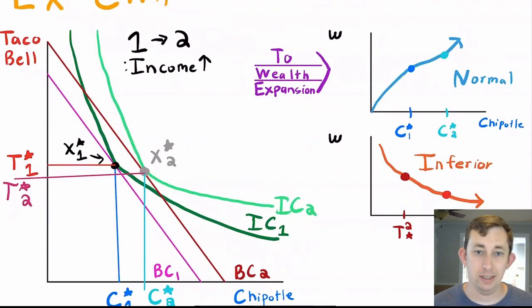think about a wealth expansion where we can imagine that we've done this for an infinite number of income levels. The budget constraint sometimes is way out here and the budget constraint is sometimes way down here when I'm pretty poor.